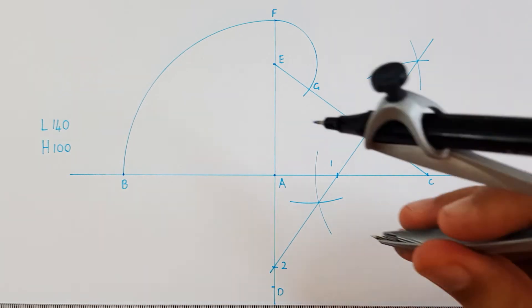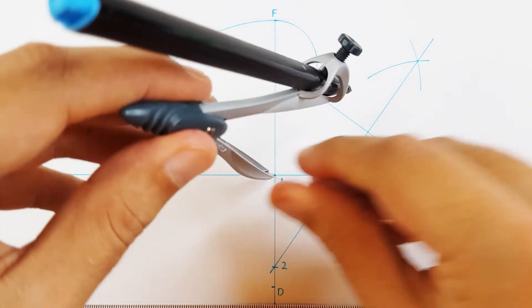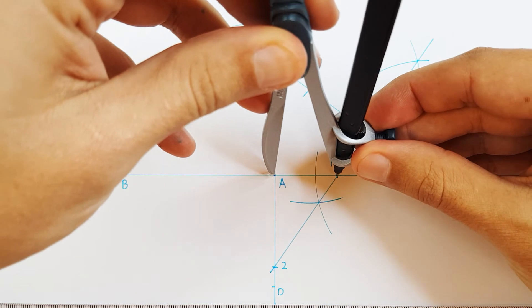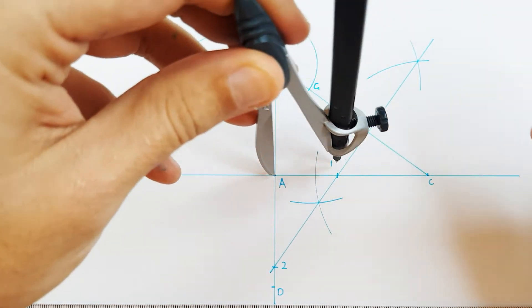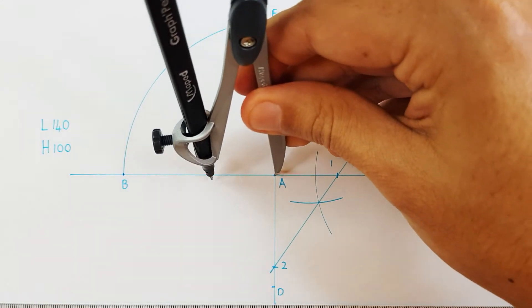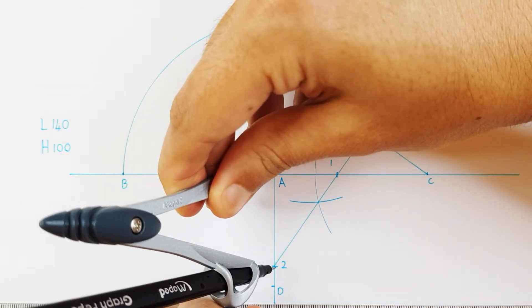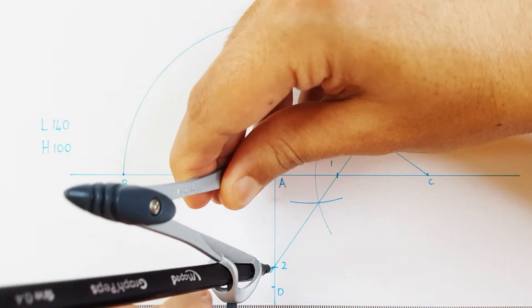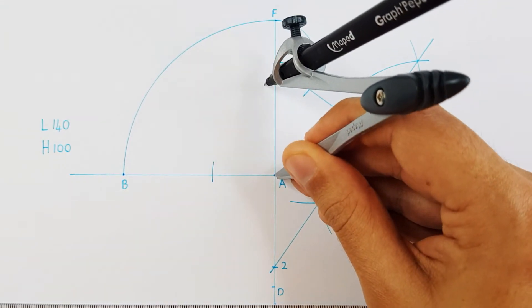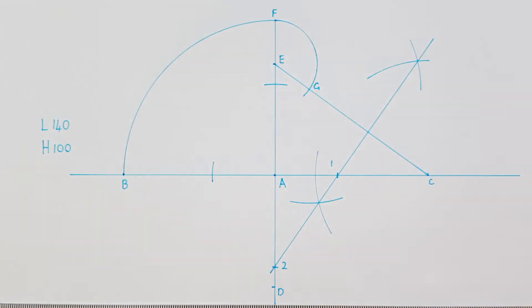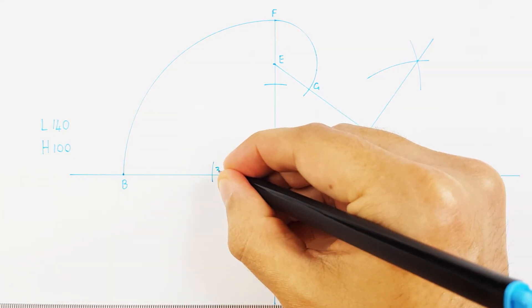We will then take our compass and project point 1 and 2 to the opposite sides of our axes. We can label them as point 3 and 4.